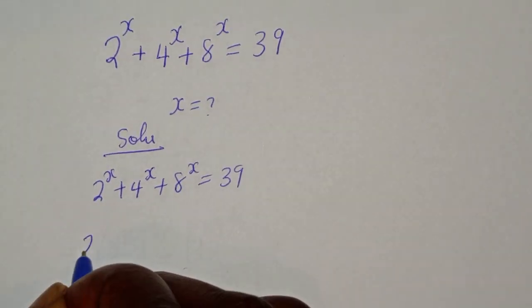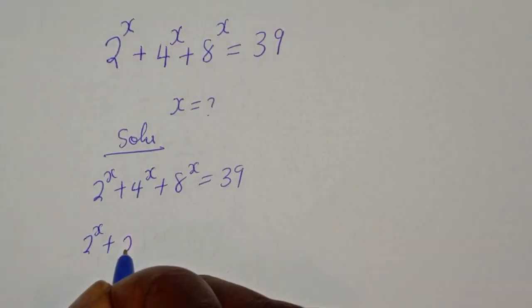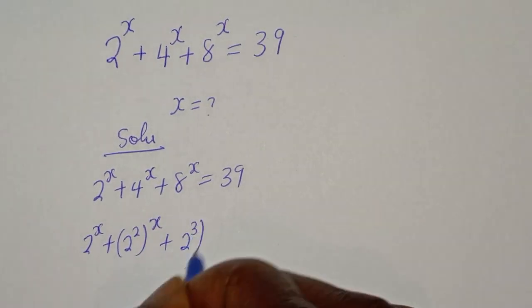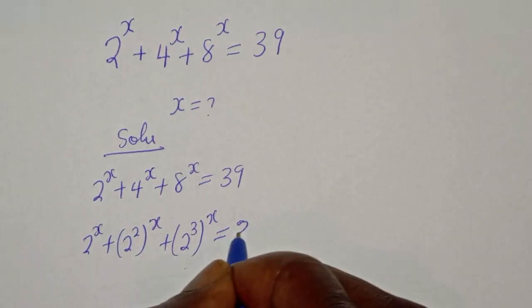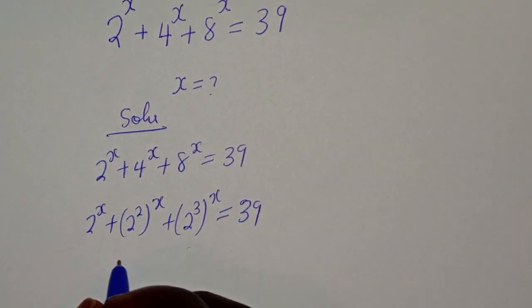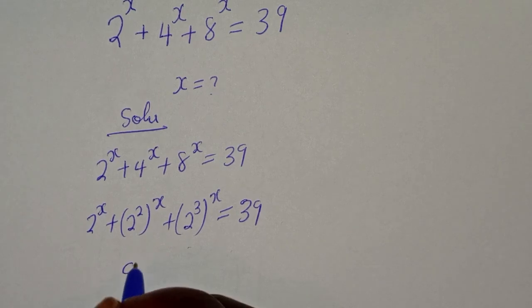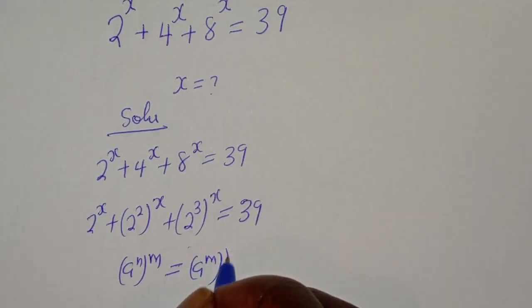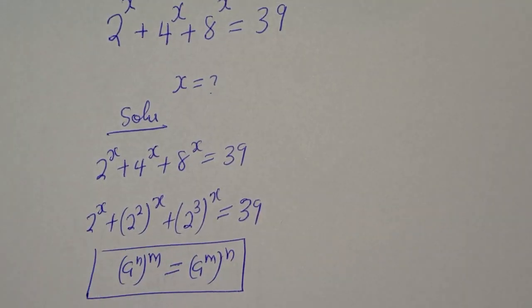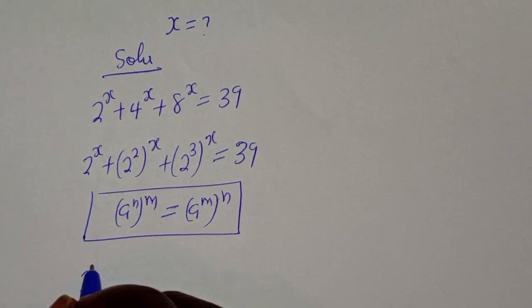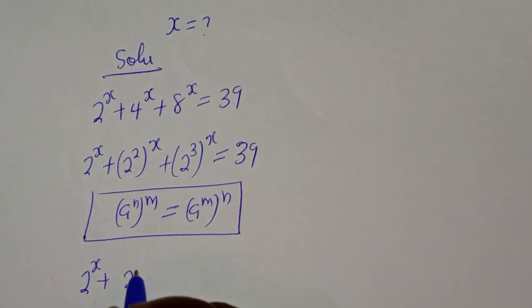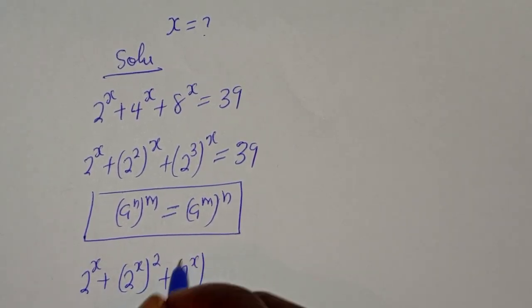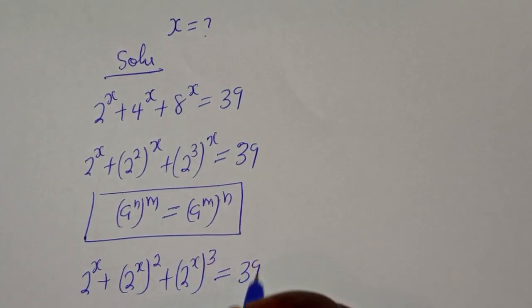We rewrite: 2 raised to power s plus 2 squared to the power of s plus 2 raised to power 3 to the power of s is equal to 39. Using the rule a raised to power n to the power of m equals a raised to power n times m, this becomes 2 raised to power s plus 2 raised to power 2s plus 2 raised to power 3s is equal to 39.